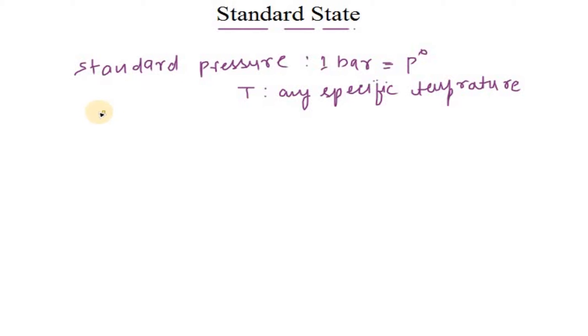That is the standard pressure. Now for an ideal gas, the P⁰, which we call the standard pressure, is 1 bar, and temperature could be any specific temperature.